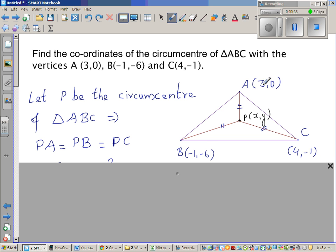So A is (3,0), B is (-1,-6), and C is (4,-1). P is the circumcentre. Now P doesn't necessarily be inside. It can be inside, it can be outside, or it can be also on the triangle. Now this is an acute angle triangle, and in an acute angle triangle, the circumcentre is inside the triangle. So P is the circumcentre, so it is at the same distance from all three vertices.